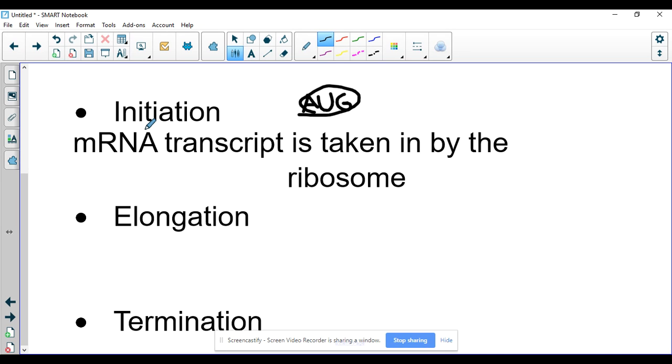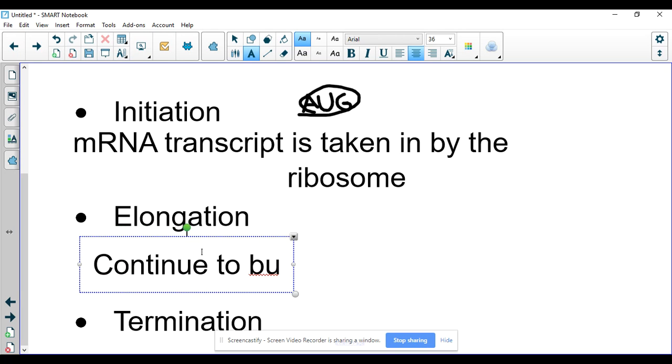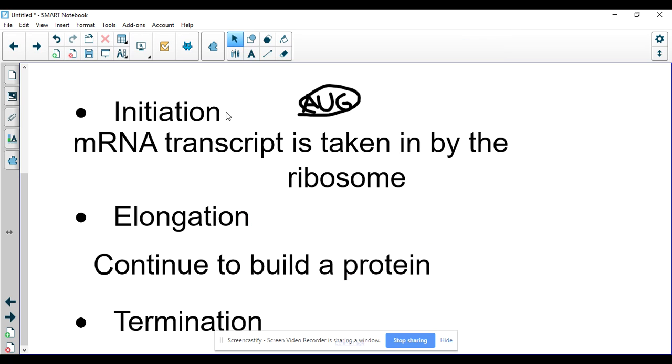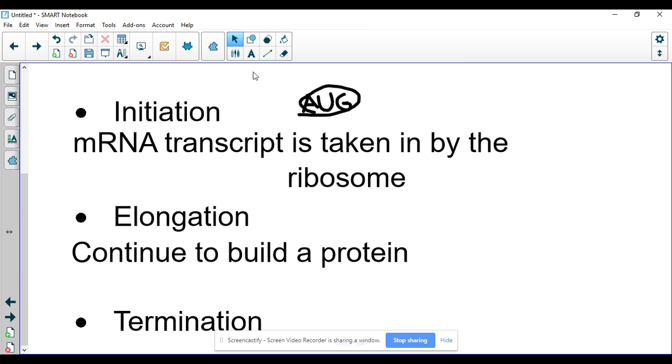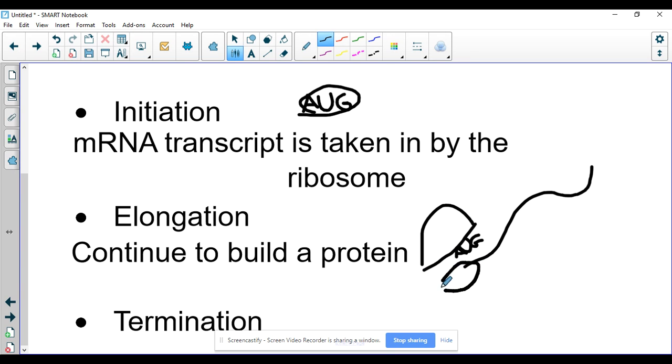That moves us into step two. This is when we build our polypeptides. So we continue to build a protein. This is when we start to build that protein. We start with AUG and then we follow that mRNA transcript down. We've got our mRNA transcript. We see that it's going to start with AUG. Remember, we've got a big unit, small unit. This is made of rRNA. And it's what's going to be responsible for reading the mRNA.